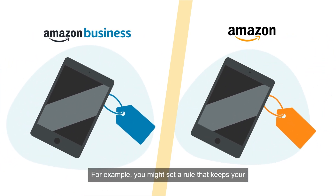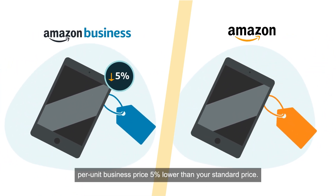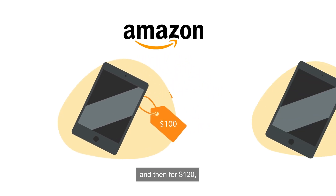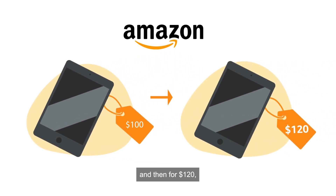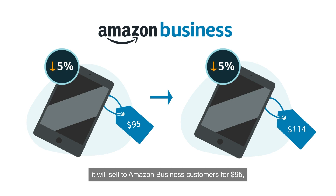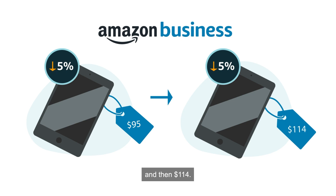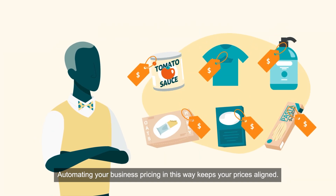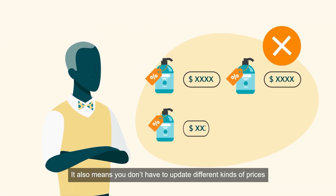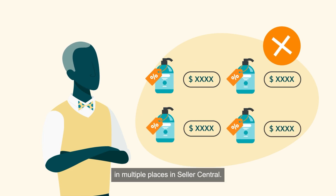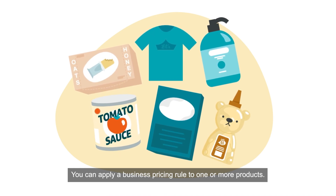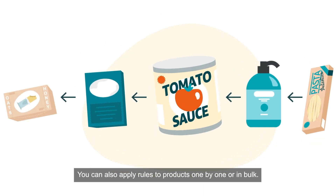For example, you might set a rule that keeps your per-unit business price 5% lower than your standard price. When your product sells to non-business customers for $100 and then for $120, it will sell to Amazon business customers for $95 and then $114. Automating your business pricing in this way keeps your prices aligned, and it also means you don't have to update different kinds of prices in multiple places in Seller Central.